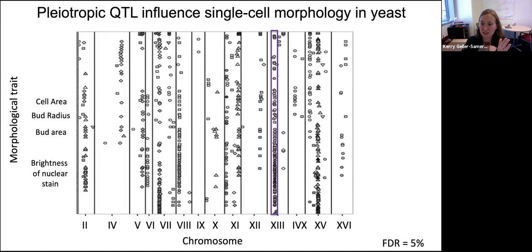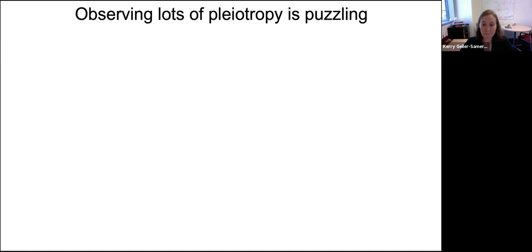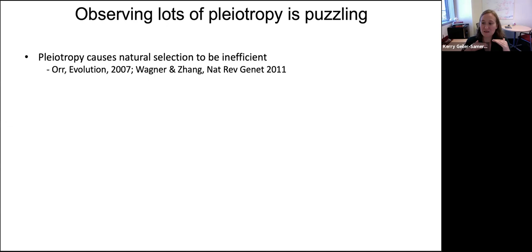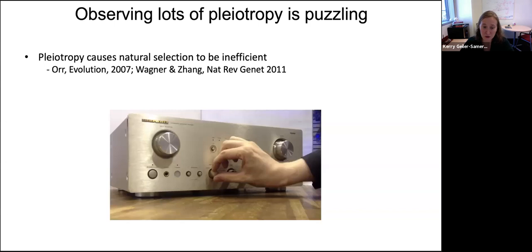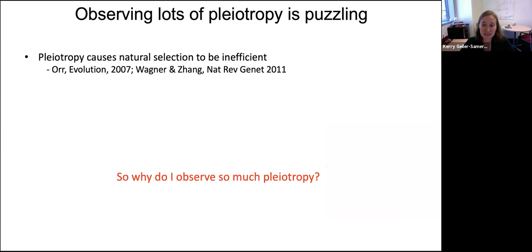This is bizarre because as an evolutionary biologist, I know natural selection is supposed to limit pleiotropy. If you have a gene that affects 73 traits, it's very hard to modify one trait without accidentally modifying 72 others. It would be like if you had a stereo and every time you turned the bass dial, the treble dial also turned, the volume changed, and the track changed. Every time you turn one dial, others simultaneously turn — that's the most intuitive explanation for why pleiotropy is costly. And yet, despite this cost, I'm seeing a lot of it.